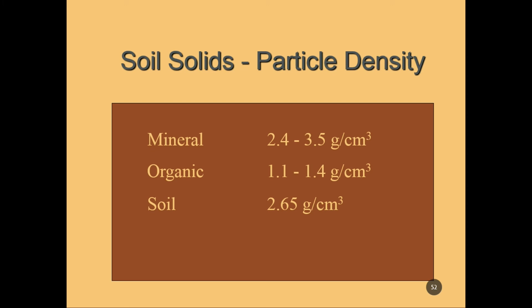You can look up different minerals — they have a range. But in our calculations when we have a soil particle density, we will use 2.65 for simplicity, in grams per cubic centimeter.